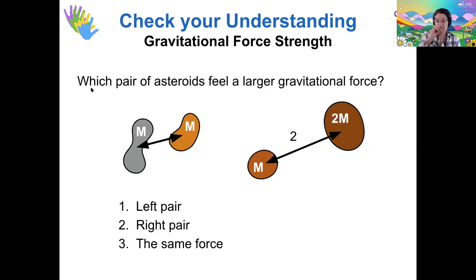All right, let's look at a slightly different situation. My graphics are all messed up here, I'm not sure why. So let's say that the left pair of asteroids, they have equal mass M and they're separated by a distance r. And on the pair on the right, let's say that they have different masses: this one has M, this one has 2M, and they're separated by 2r. So which of these asteroid pairs would feel the larger gravitational force? Aha, more people are answering correctly this time. It works.